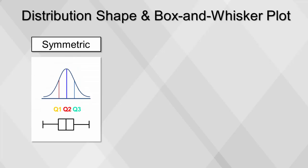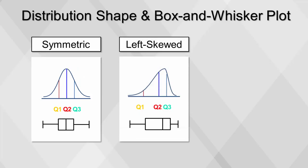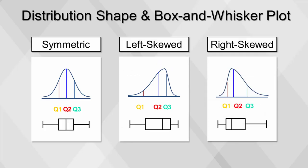If the median is at the center of the box, the distribution is symmetric. If the data have a left skew, then the median will be pulled to the right inside the box. If the data have a right skew, then the median will be pulled to the left in the box.